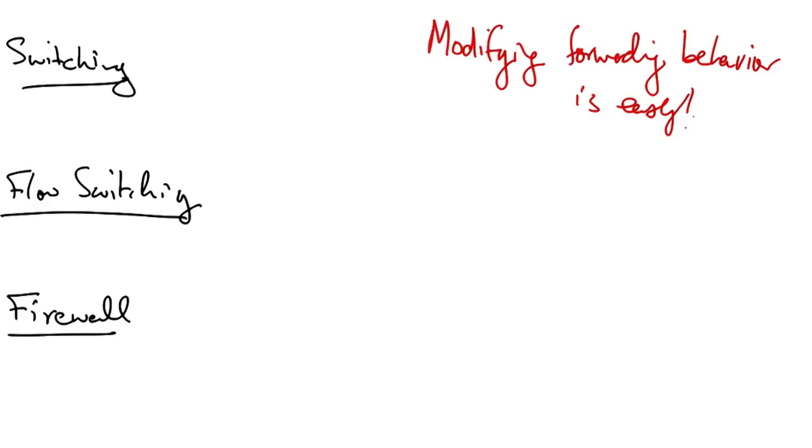OpenFlow makes modifying forwarding behavior easy, because forwarding decisions are based on matches on the OpenFlow 10 tuple.